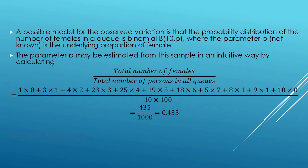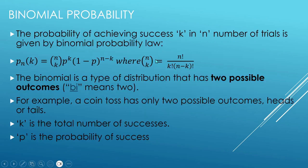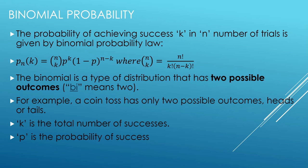First, we decide what kind of probability distribution to apply. As we know, if we have only two possible outcomes — like head and tail when flipping a coin — we can apply binomial distribution. Since there are only male and female persons in a queue, we again have binomial distribution. So we have to find the parameter p — the probability of success in a single trial — where p is the underlying proportion of females.